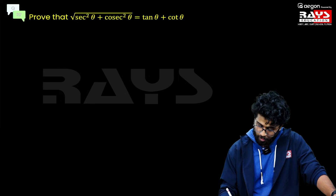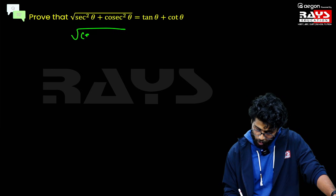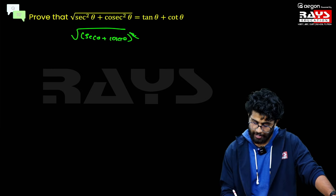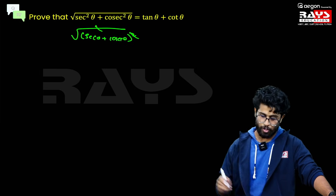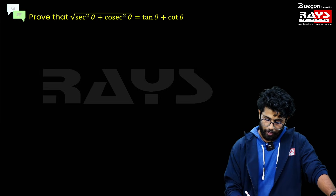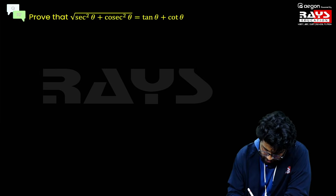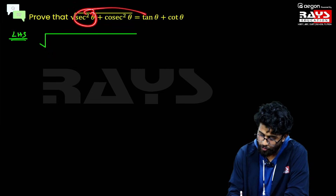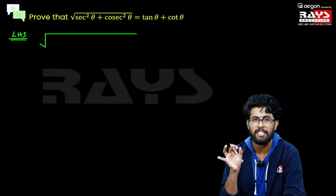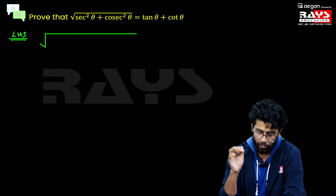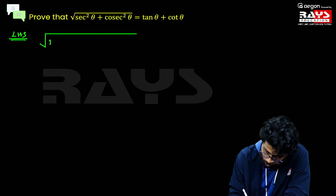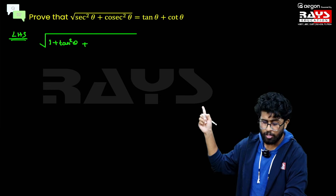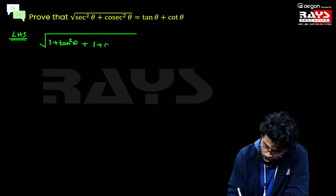If it were in the form of (sec θ + cosec θ) commonly squared, we could cancel the square and root. But we cannot do that here. Let's write the LHS and rewrite sec²θ in terms of tan θ using the identity sec²θ − tan²θ = 1, which gives sec²θ = 1 + tan²θ. And cosec²θ in terms of cot θ is 1 + cot²θ.